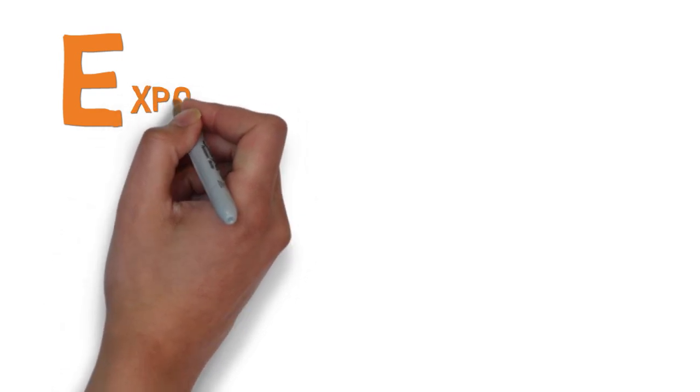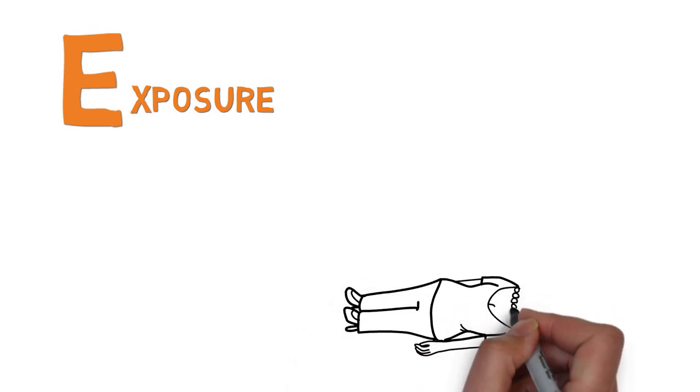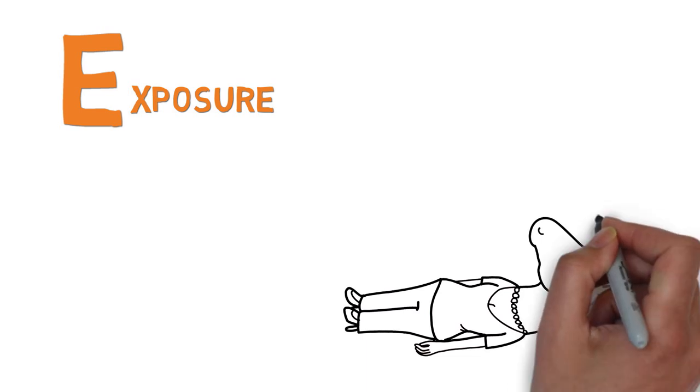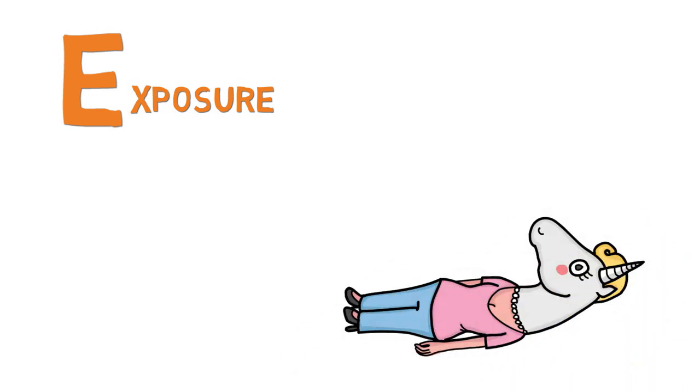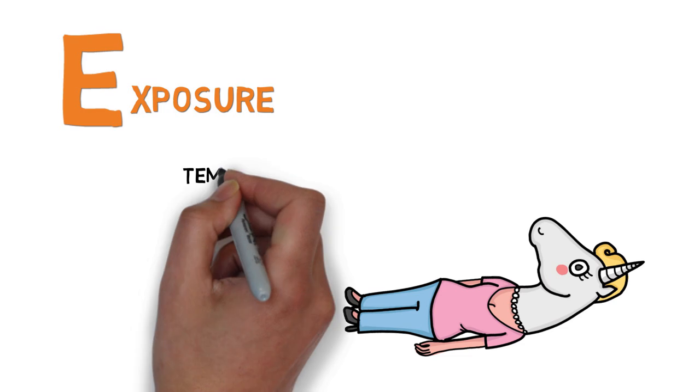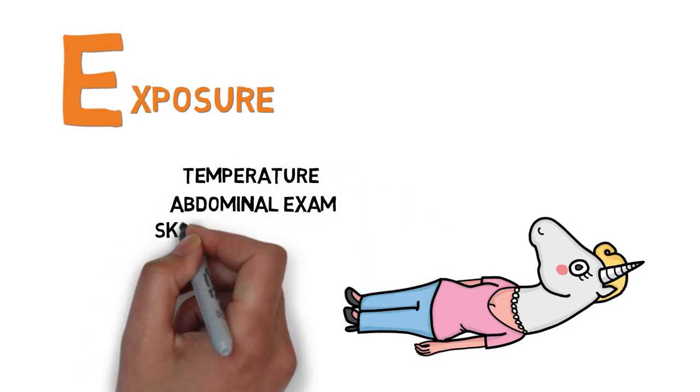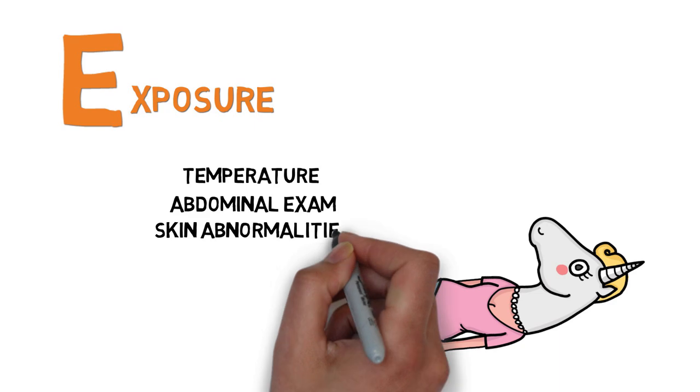E is for environment or exposure. You've arrived at E, which means that you've assessed and addressed all problems in A, B, C and D. You now have time to take a closer look at the patient. Check the temperature. And look at the patient from top to bottom. What haven't you done yet from the physical examination? Perform the abdominal exam. Look for any skin abnormalities, etc.